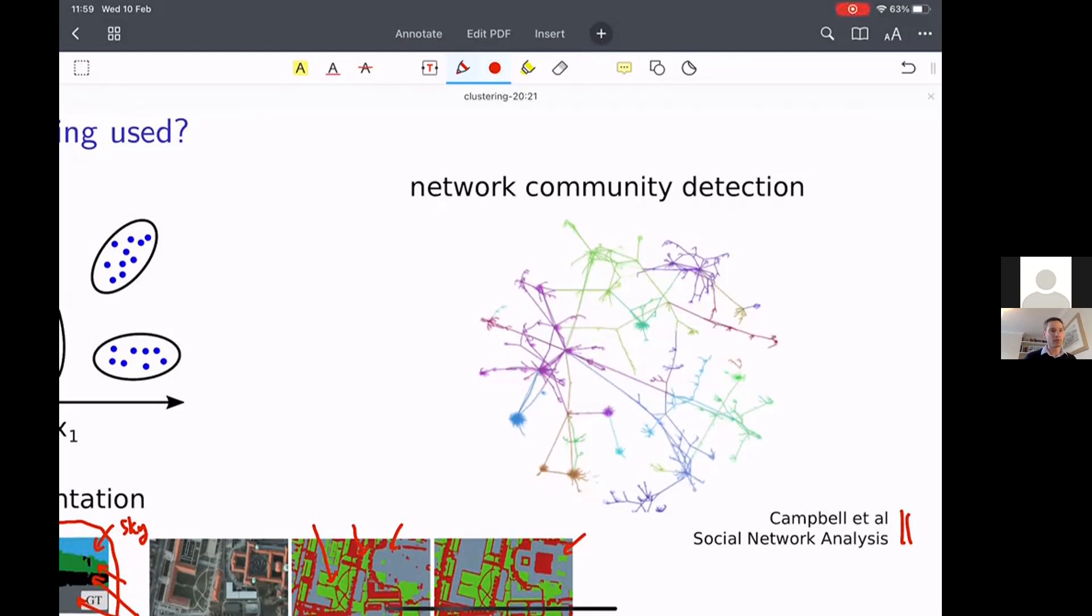And then that can be used, for instance, to understand social dynamics or for advertising purposes, and so on and so forth. So clustering doesn't have to be on the sort of normal type of data structures we sort of think about like vectors, it can also be applied to things like nodes on a graph.